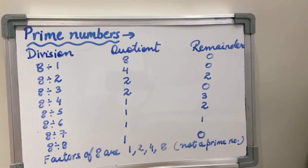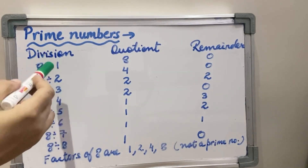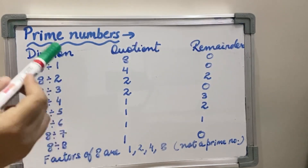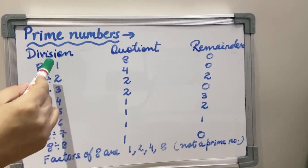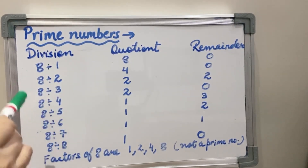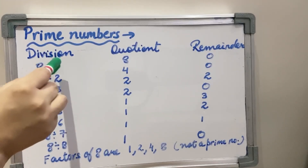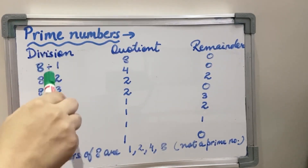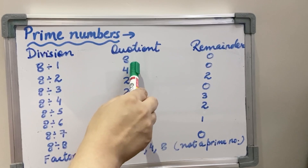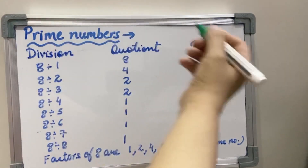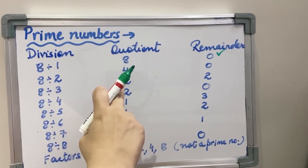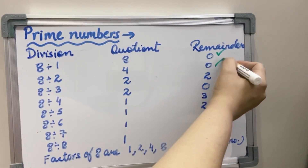Now I am taking the number 8 and finding its factors to check whether it is a prime number or not. To find the factors I am dividing all the numbers up to 8: 1, 2, 3, 4, 5, 6, 7, 8. When I divided 8 by 1, the quotient is 8 and remainder is 0 — that means it is a factor. When I divided by 2, I got remainder 0 and quotient 4 — that means it is a factor.